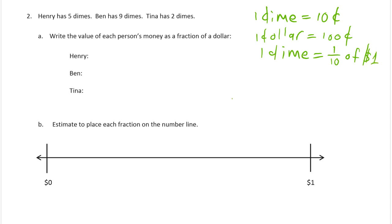Since Henry has 5 dimes, he's got 5 tenths of 1 dollar. Ben has 9 dimes, so he has 9 tenths of 1 dollar. And Tina has 2 dimes, she has 2 tenths of 1 dollar.